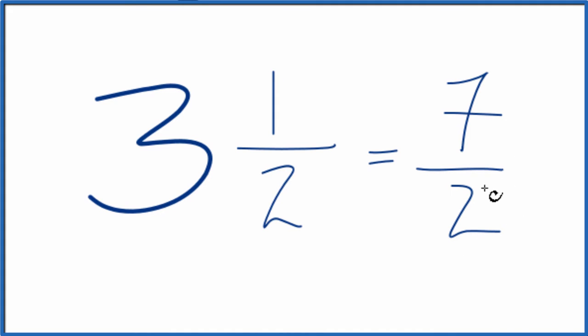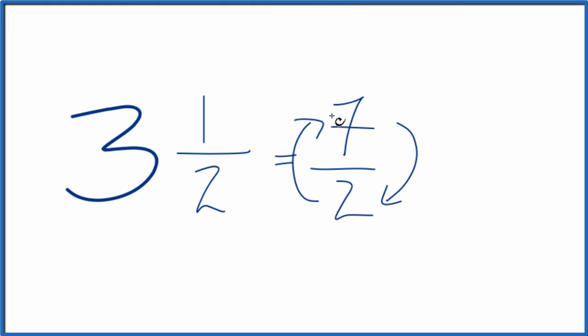That's our improper fraction. And now to take the reciprocal, we take the numerator, move that to the bottom, the denominator goes to the top. So we have 2 over 7.